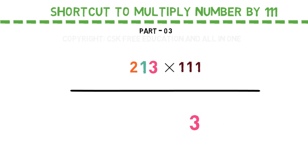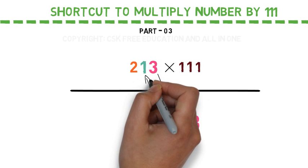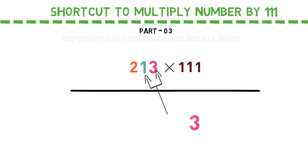Then add the unit digit and tens digit, which is here 1 and 3. 1 and 3 is 4.